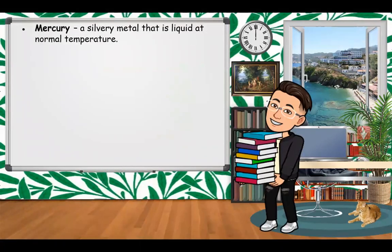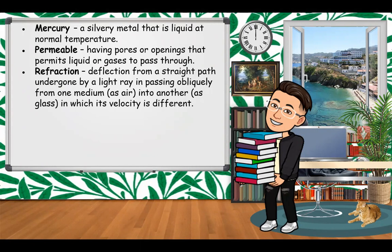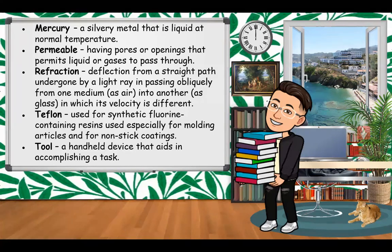Mercury is a silvery metal that is liquid at normal temperature. Permeable means having pores or openings that permit liquid or gases to pass through. Refraction means deflection from a straight path undergone by a light ray passing obliquely from one medium, such as air, into another, such as glass, in which its velocity is different. Teflon refers to synthetic fluorine-containing resins used especially for molding articles and non-stick coatings. A tool is a handheld device that aids in accomplishing a task.